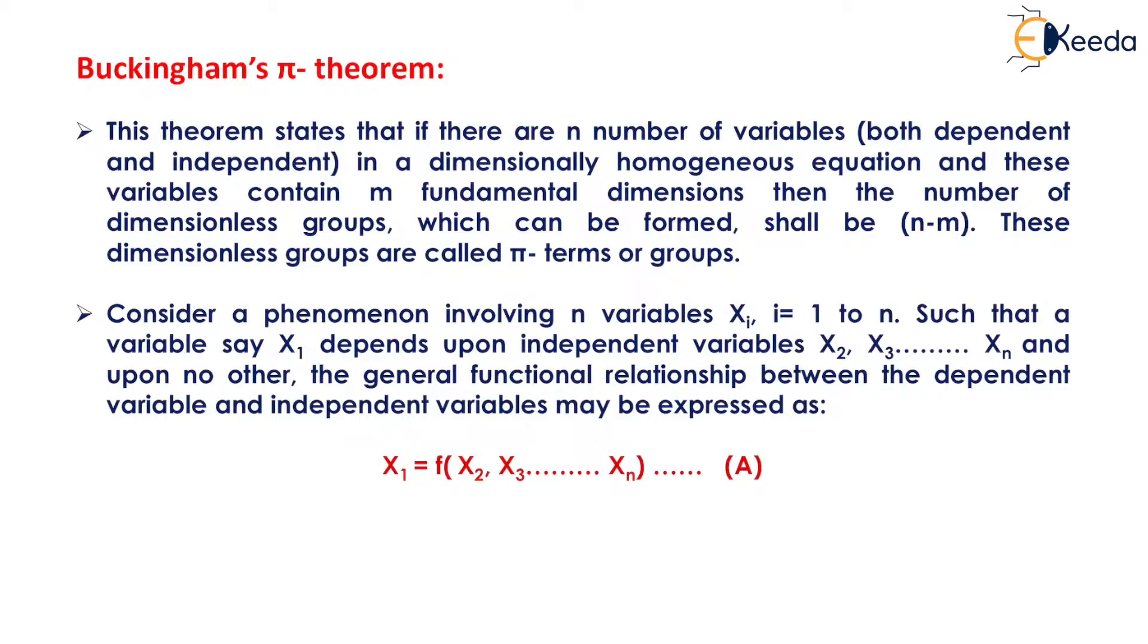This theorem states that if there are n number of variables, both dependent and independent, in a dimensionally homogeneous equation, and these variables contain m fundamental dimensions, then the number of dimensionless groups which can be formed shall be n minus m. These dimensionless groups are called Pi terms or groups.